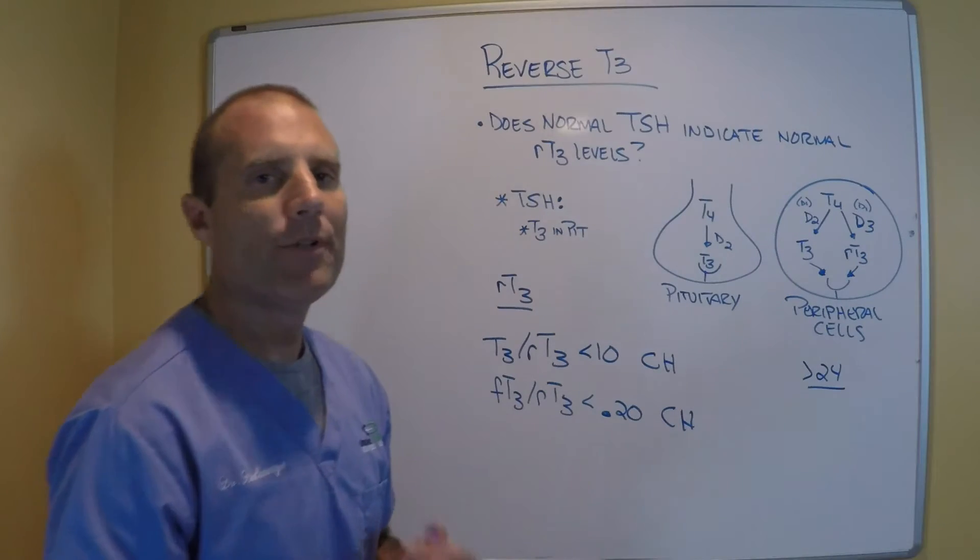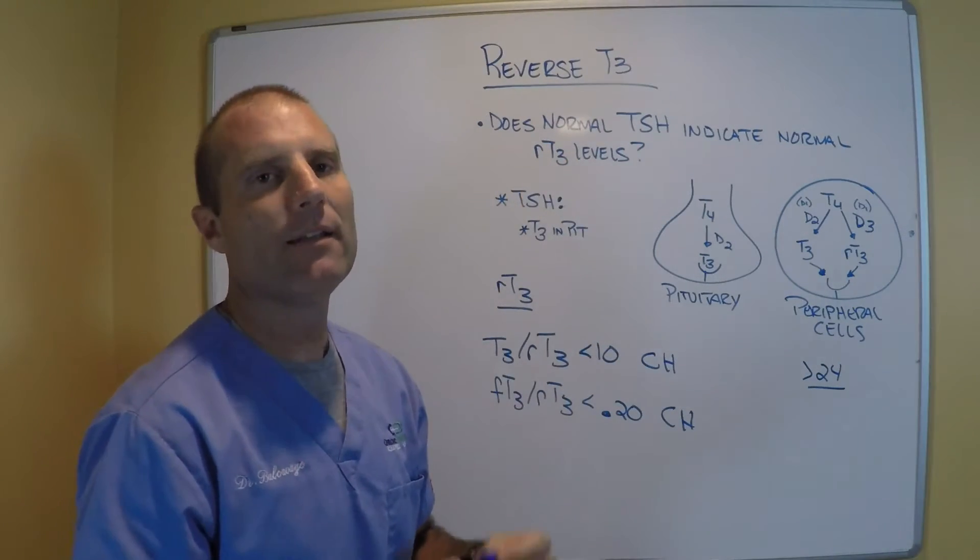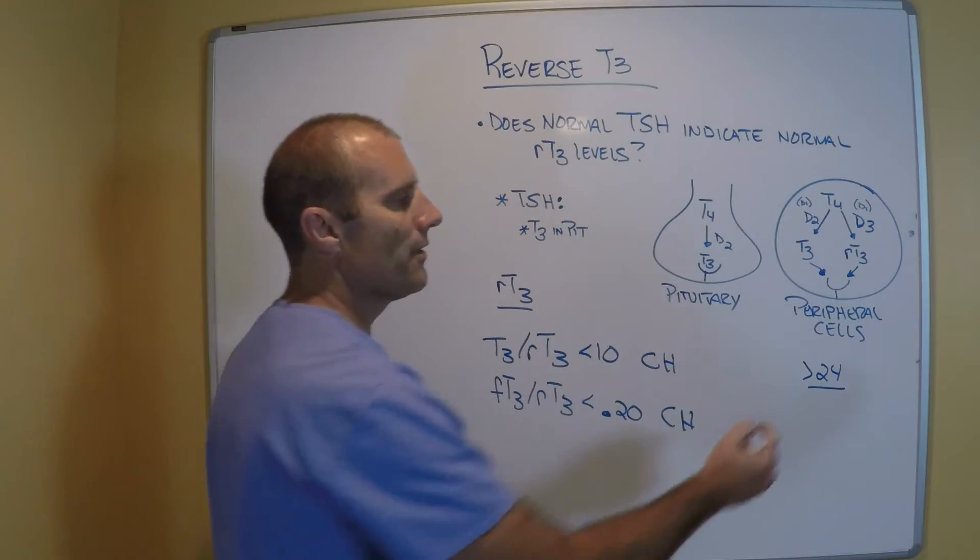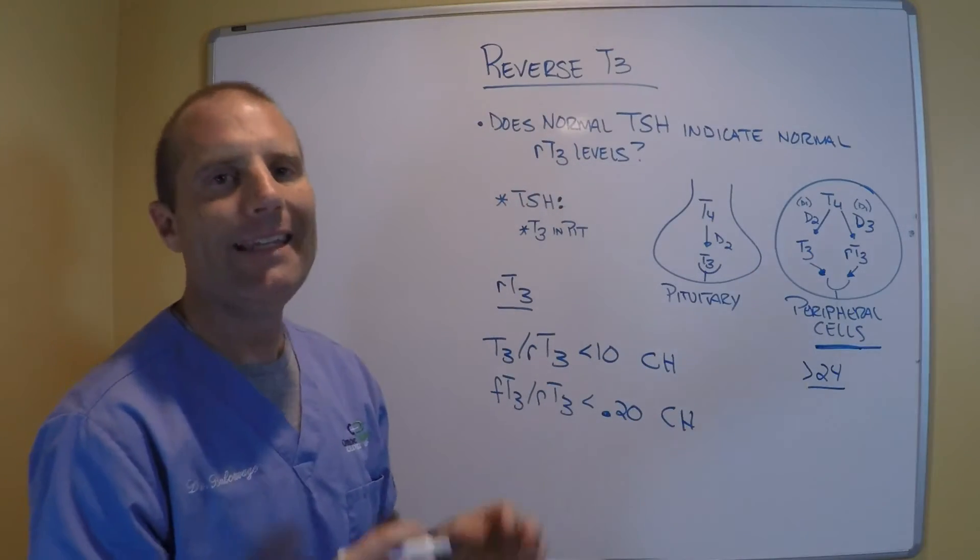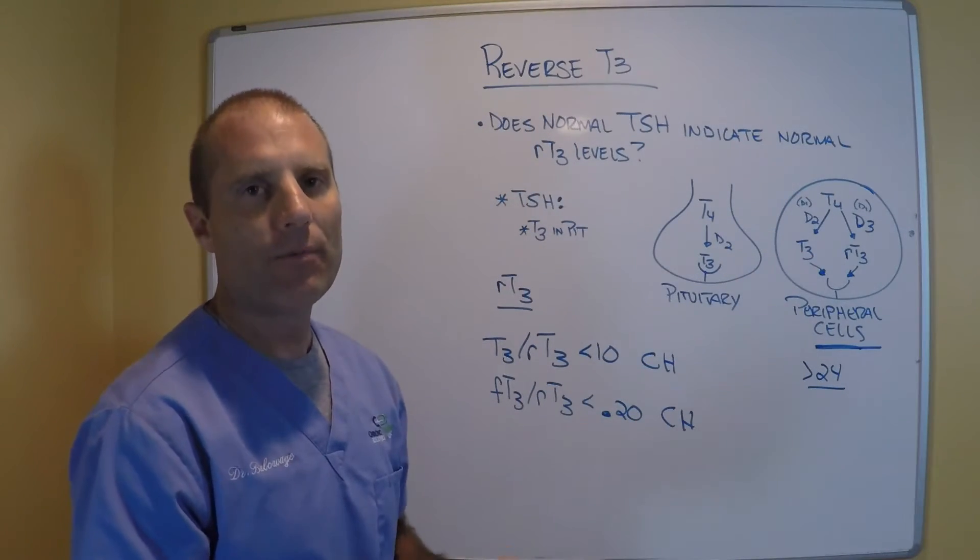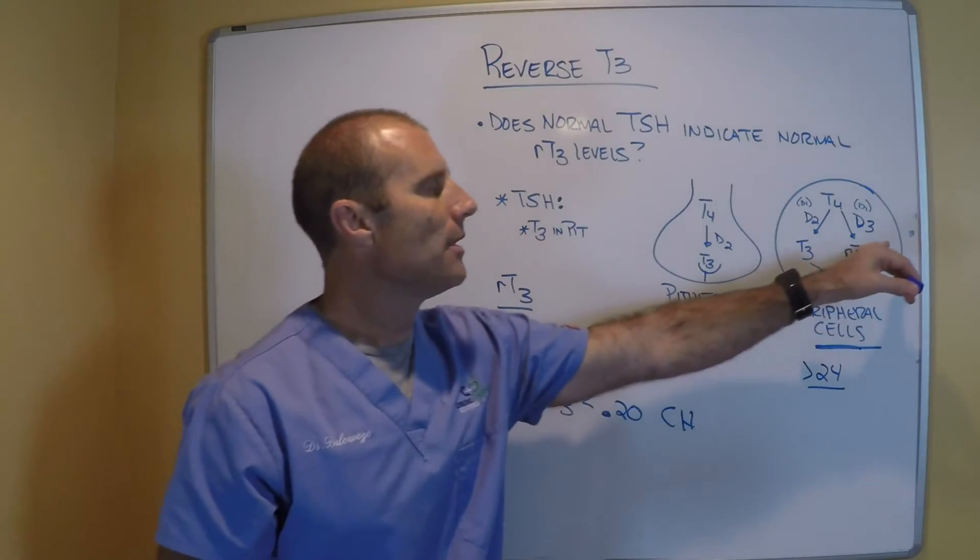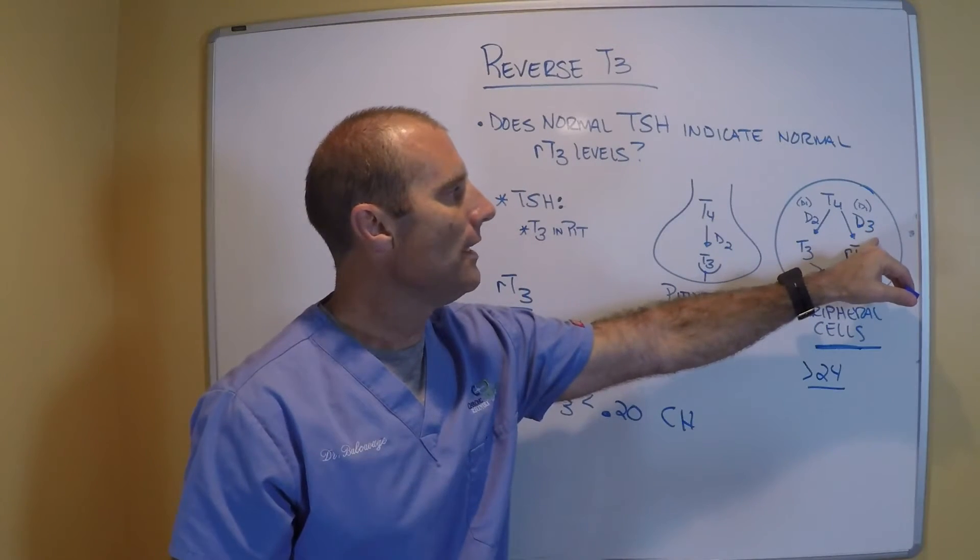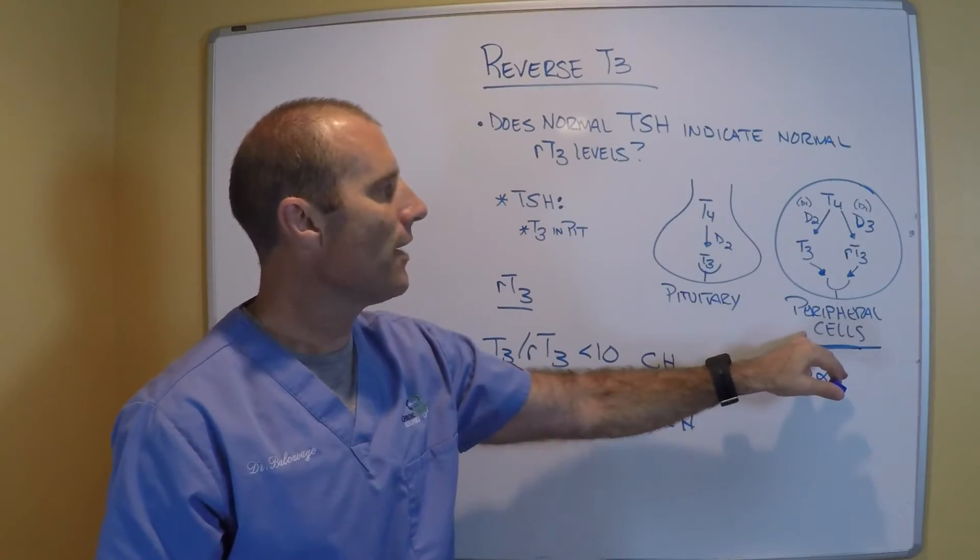Remember, hypothyroid symptoms don't occur because the gland isn't necessarily making T4 and T3. Hypothyroid symptoms occur because the peripheral tissues aren't getting enough T3. And one of the reasons they may not get enough T3 is because of the stress responses on the body. The body's using D3 to convert T4 to reverse T3 in the peripheral cells.